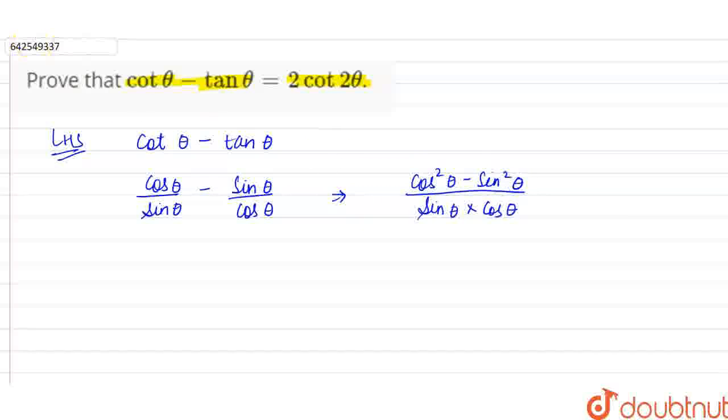Now we have one formula which says that the formula for cos 2 theta is equal to cos square theta minus sin square theta. So we can say in the numerator, we can write it as cos 2 theta, cos 2 theta over sin theta into cos theta.